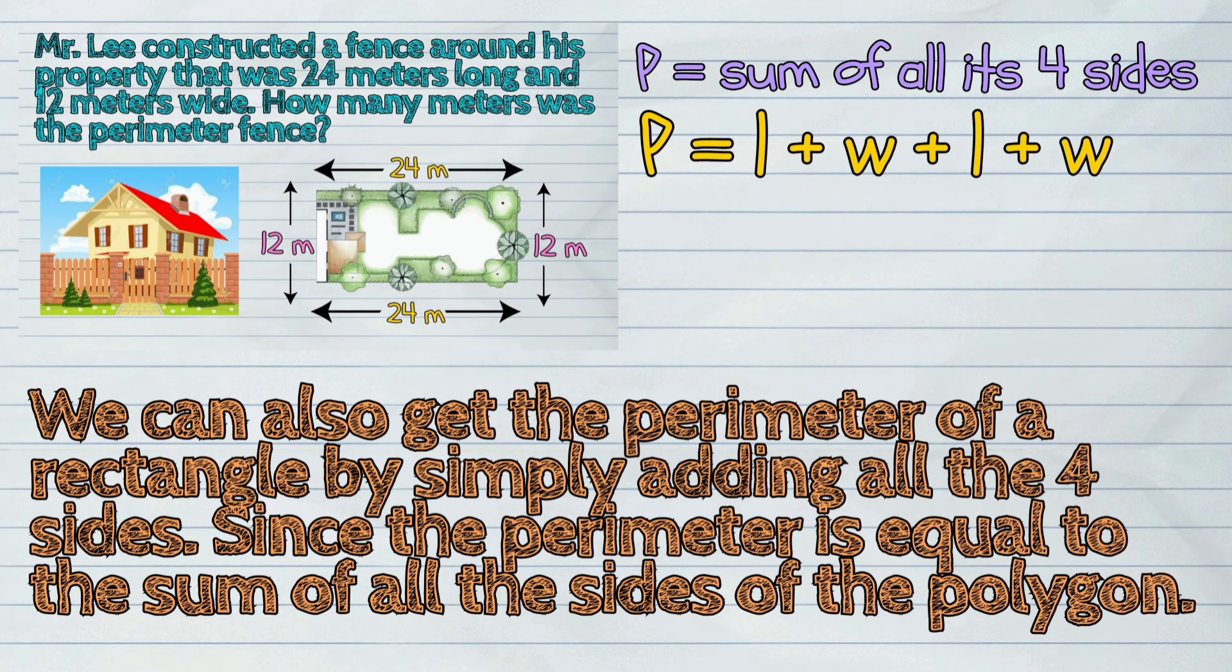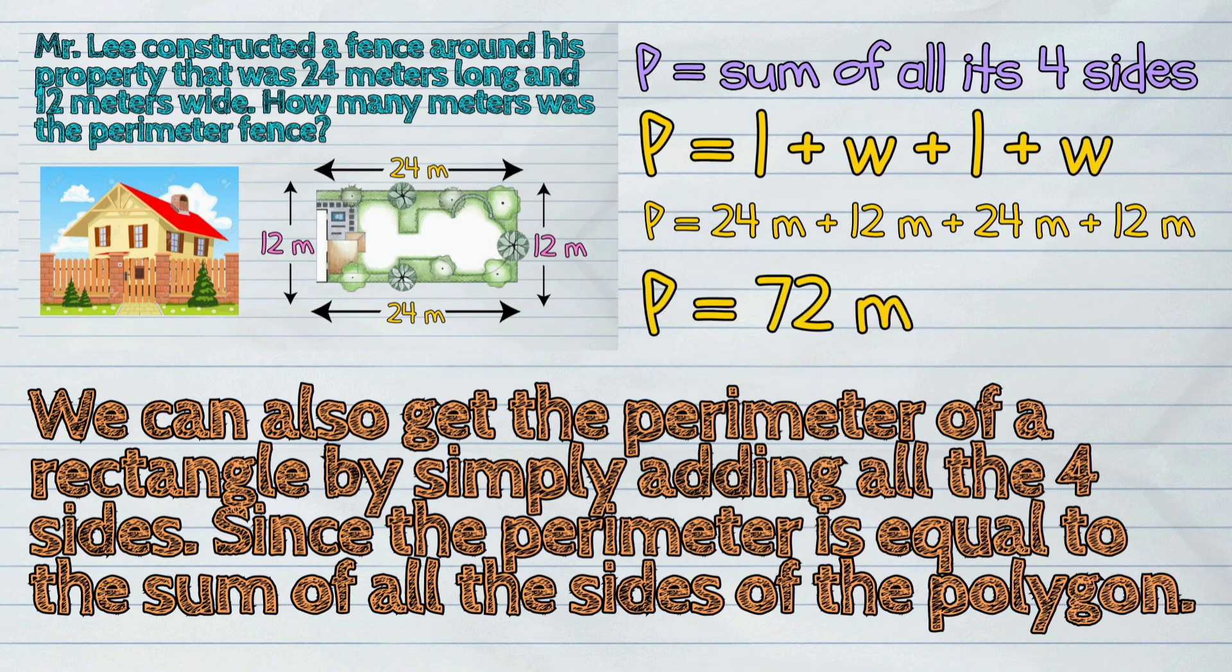We have: P = 24 meters + 12 meters + 24 meters + 12 meters. This gives the same answer of 72 meters.